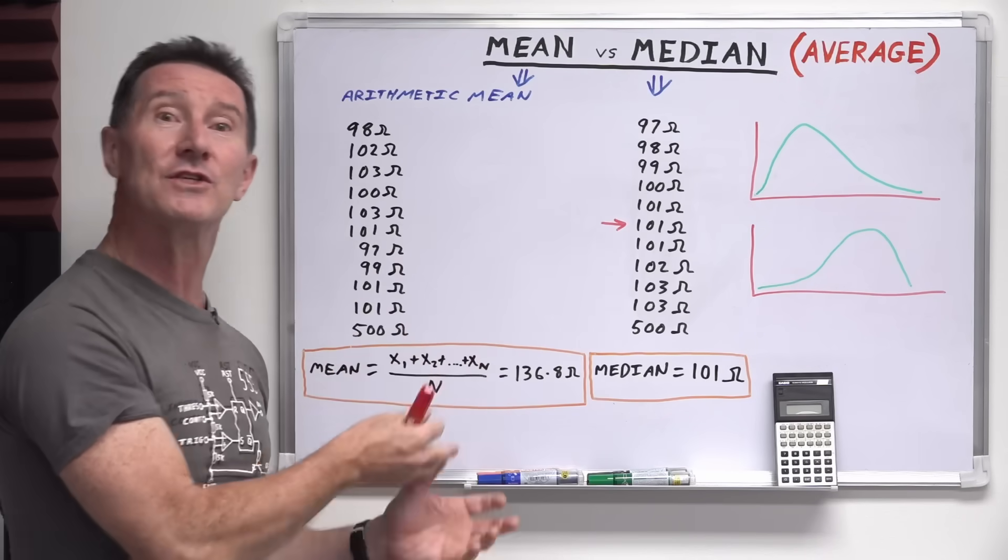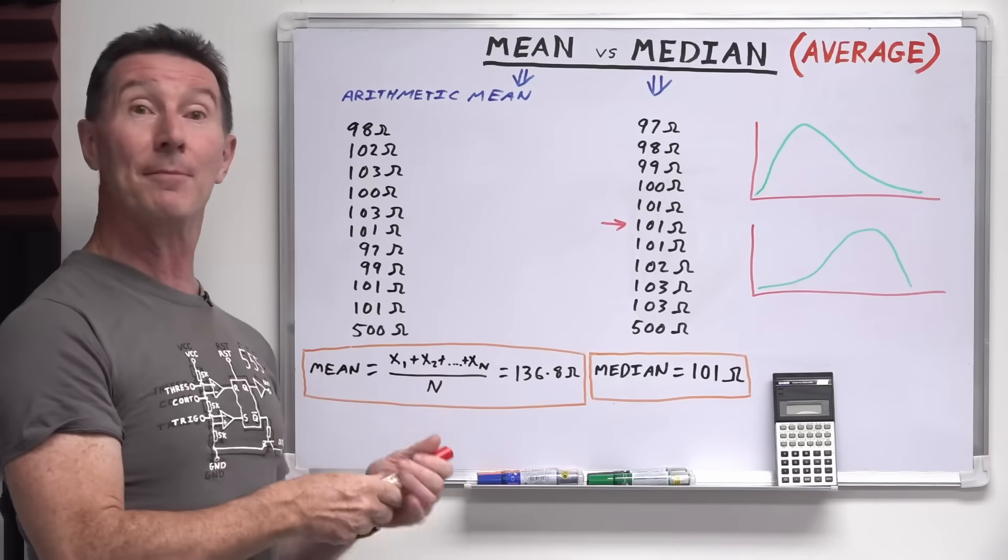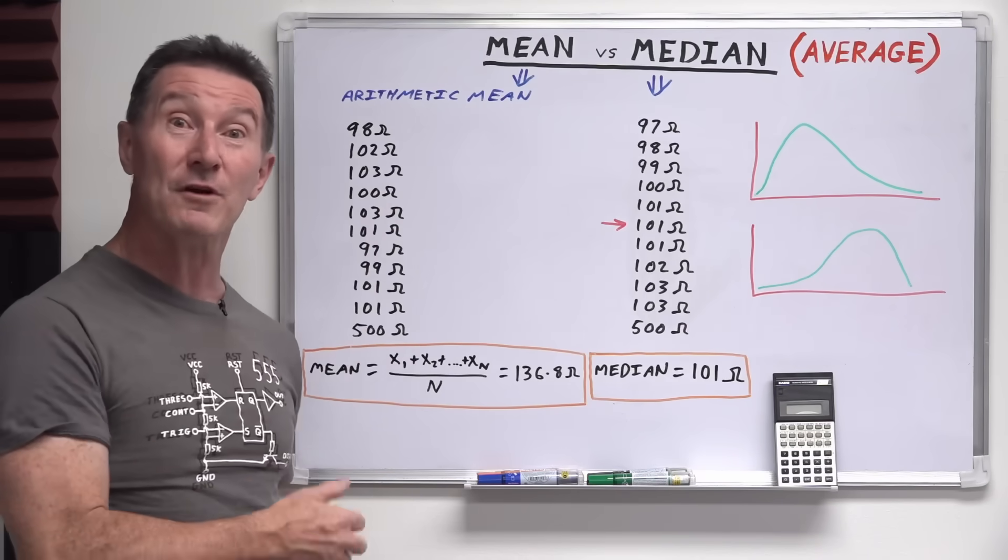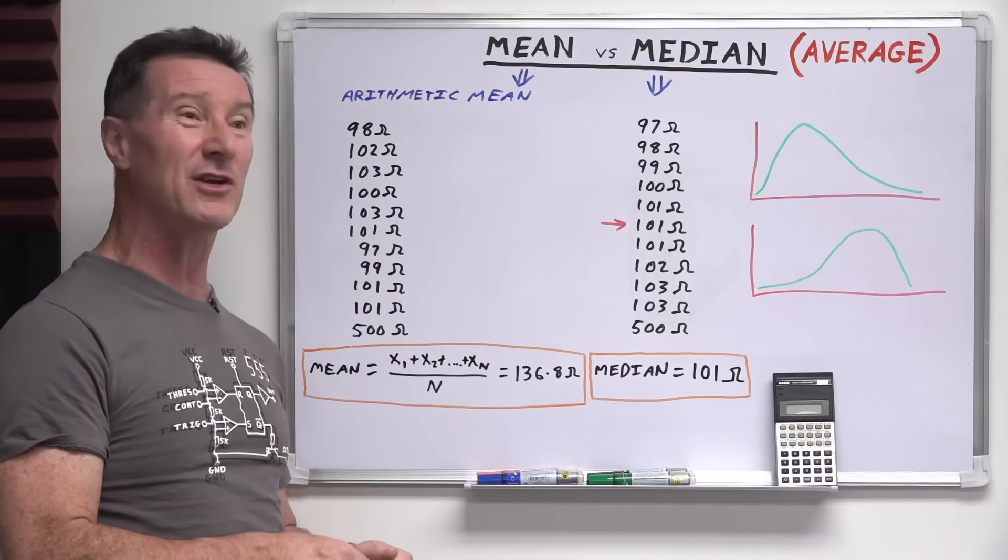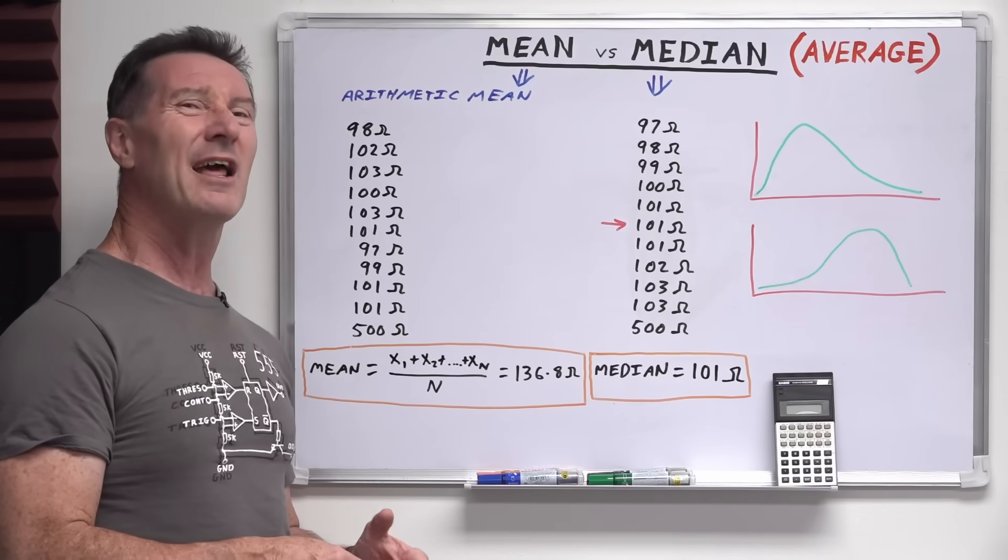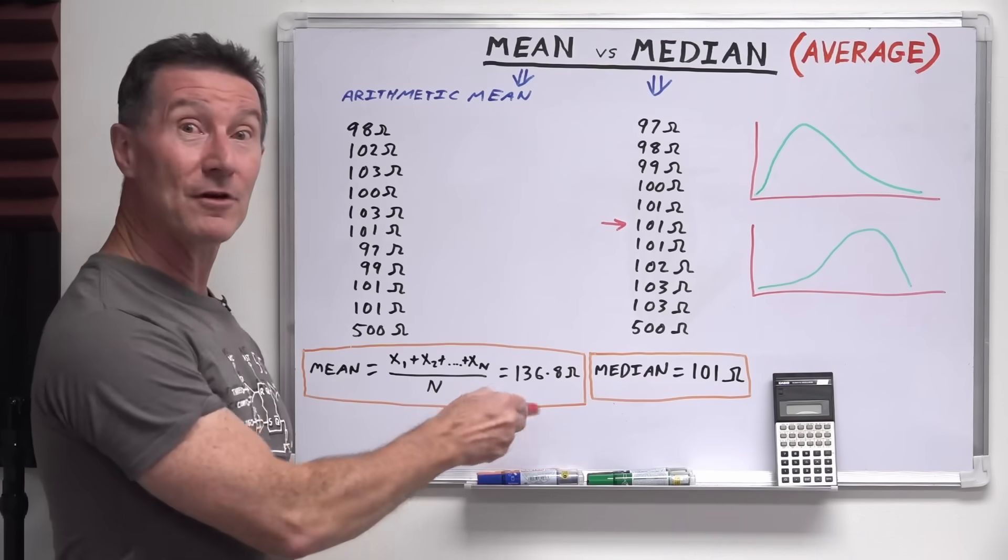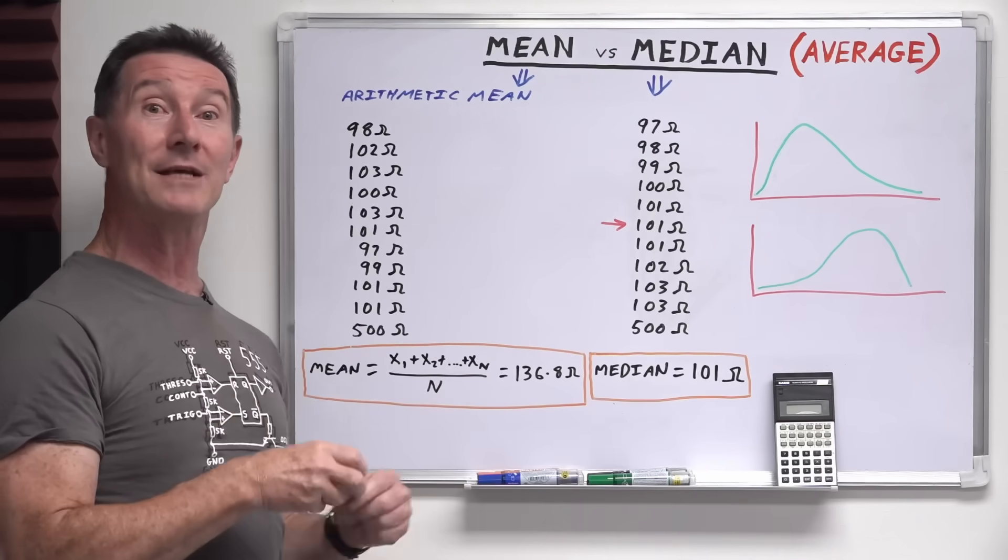In the case of house prices or in the case of wages, for example, the government might be telling you that your average wages have risen by $10,000 this year, and you go, yeah I don't think so. It's because they're using the average value. Let's say you worked at a company, for example.